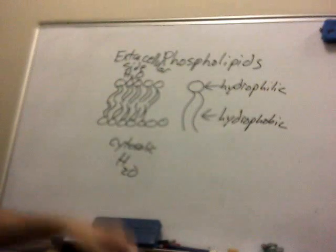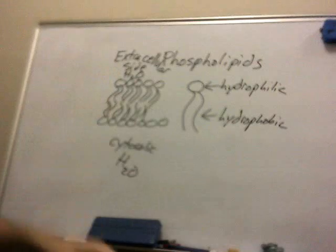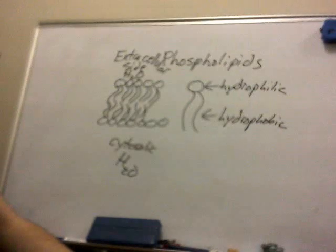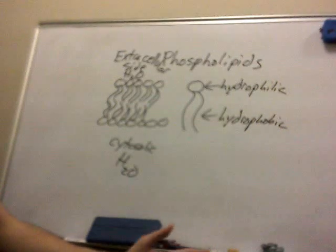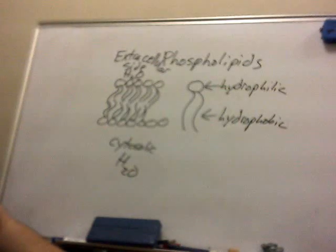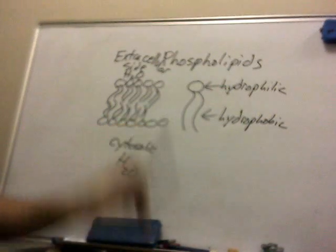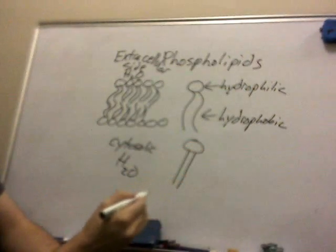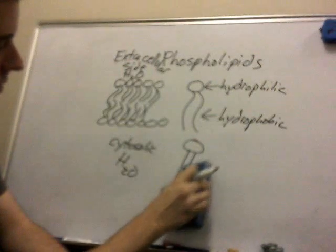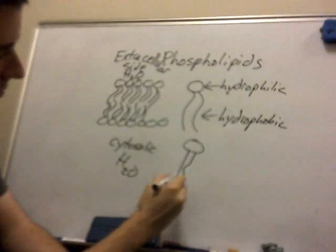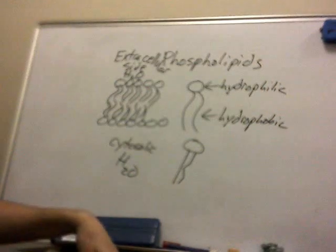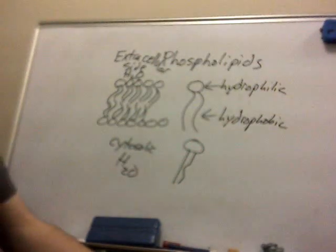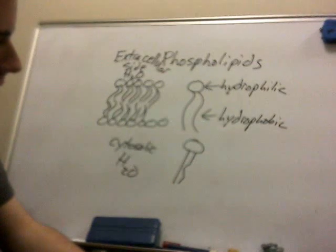If the temperature is high, the cell will maintain fluidity by keeping as many single bonds in the hydrocarbon chain — alkanes rather than alkenes. Whereas if the temperature starts to drop, to maintain fluidity so the cell doesn't freeze or become rigid, double bonds will start to form on the hydrocarbon chains, creating kinks in the chain instead of a straight alkane. These kinks create steric hindrance and prevent phospholipids from packing as closely together.